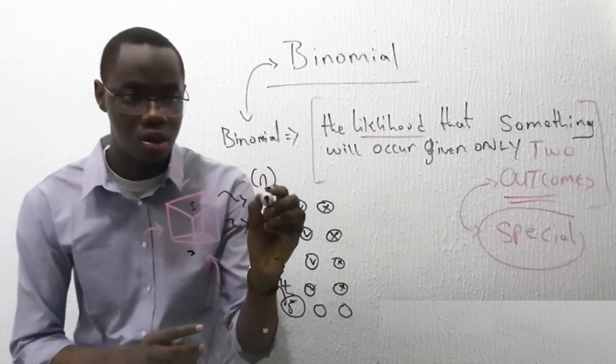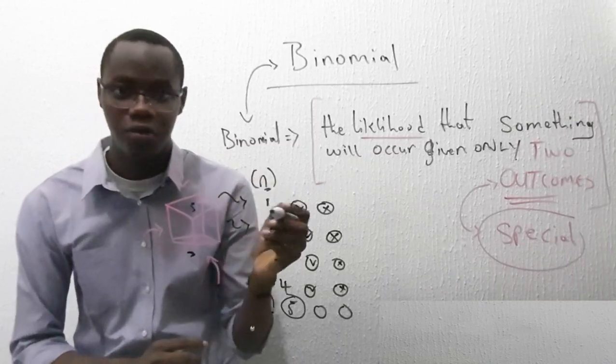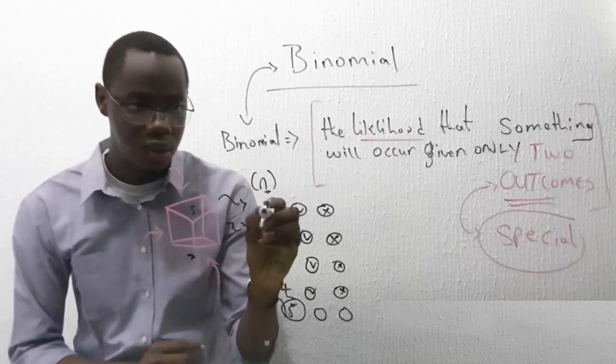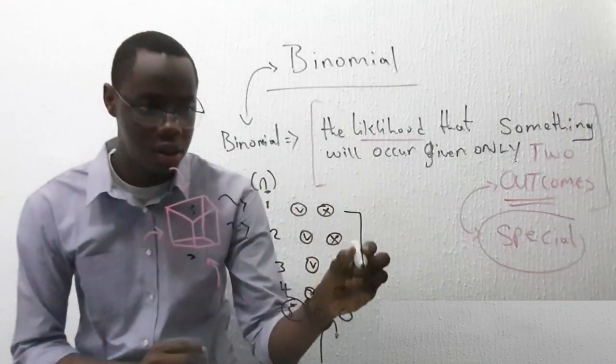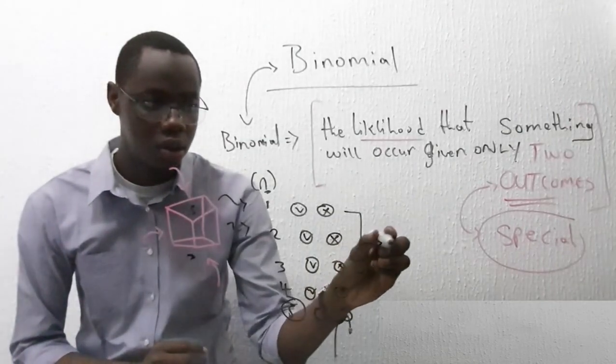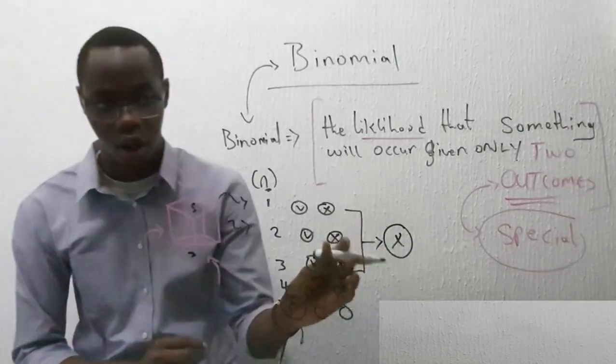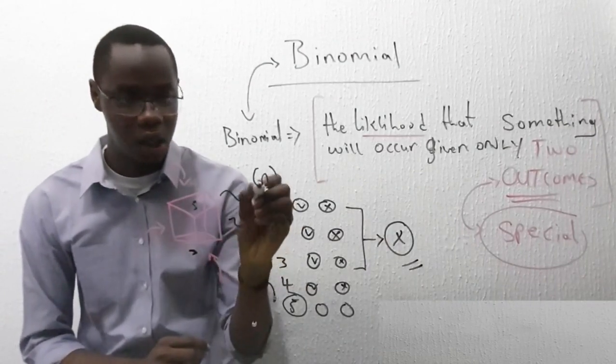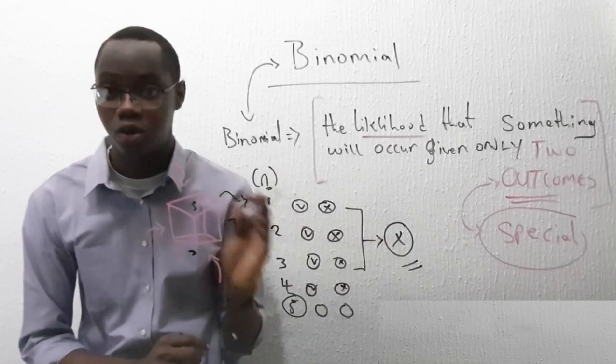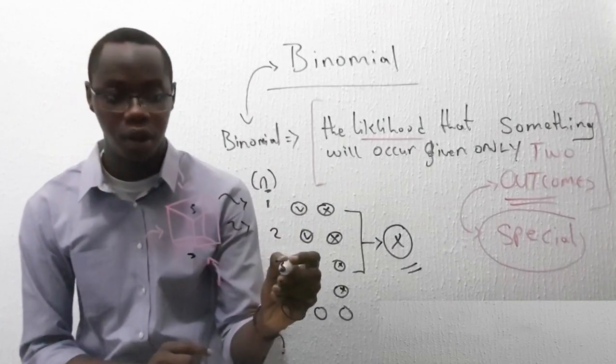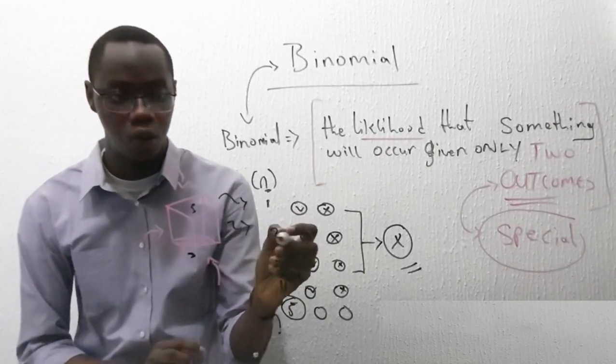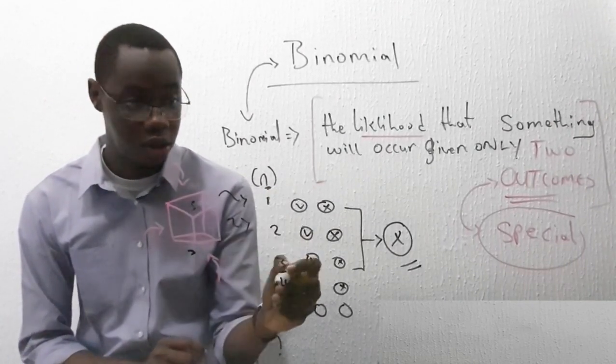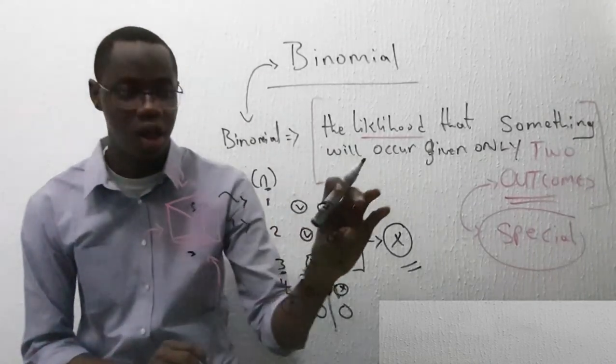And sometimes the question might tell us, or most times, every time, the question will tell us we are only interested in these three. So that would be the X, but don't worry, I will explain what this X means very soon. The question will tell us we have one, two, three, four, five trials, but we're only interested in three, or we're only interested in two, or we're only interested in one, or we're interested in four, or we're interested in the whole five. That would be the X.